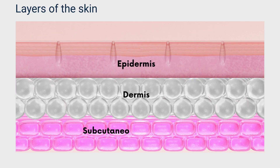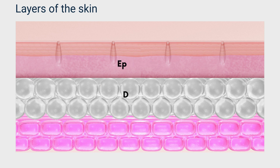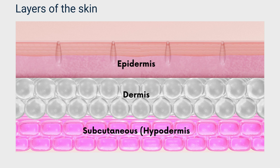In order to understand how tissue is affected when laser energy is delivered, we need to know the layers of the skin. The skin is the largest organ of the human body and is primarily composed of three main layers. The epidermis is the outermost layer of the skin and acts as a protective barrier. It is composed mainly of keratinocytes, which produce the protein keratin. The epidermis itself has multiple sub-layers.